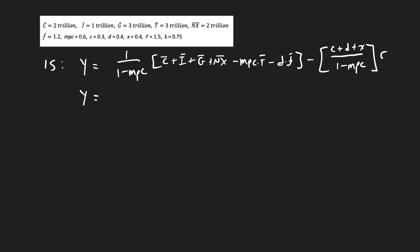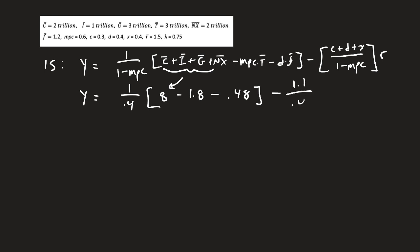Now we plug all that information in. We have 1 over (1 minus 0.6), which is 0.4. C, I, G, and NX sum to 2, 3, 4, 5, 6, 7, 8 — so that part equals 8. Minus MPC times T is 0.6 times 3, which is 1.8. Then minus D times F-bar is 0.4 times 1.2, which equals 0.48. Minus C plus D plus X on top, which sums to 1.1, divided by 0.4, times R.